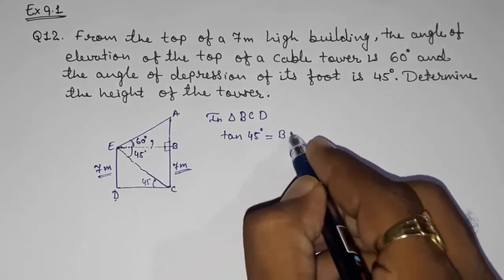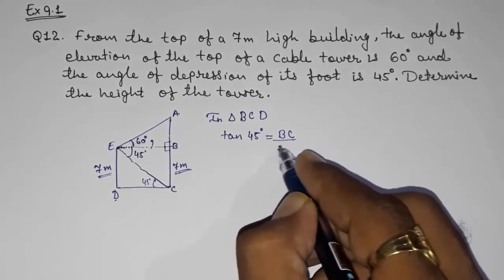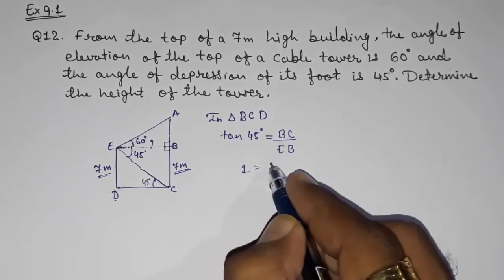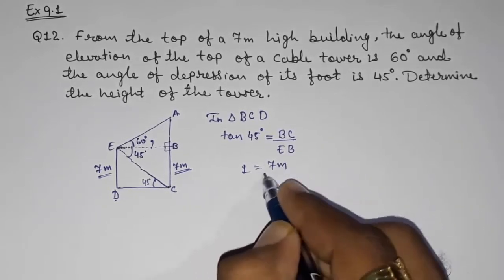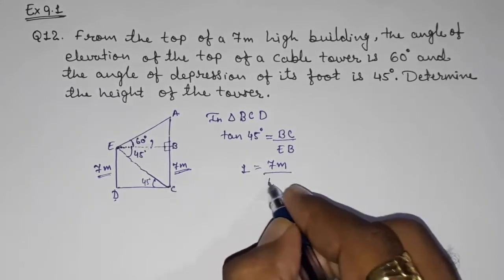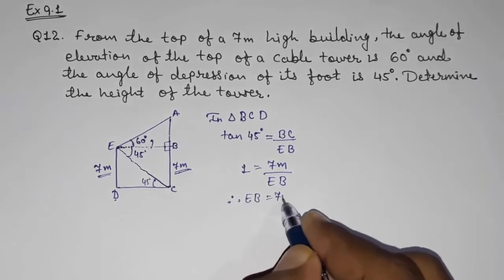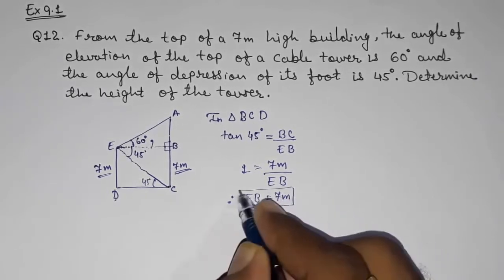Tan 45 that will be equal to BC upon EB. Now we know tan 45 is 1. You see they had given us 7 meters. EB that we want to find out. Therefore EB will be equal to 7 meters. Take it as result number 1.